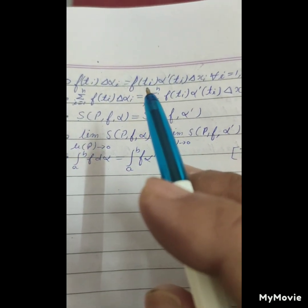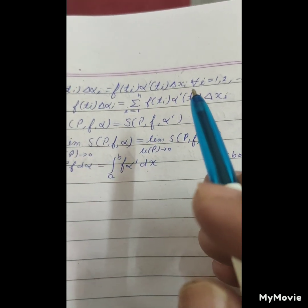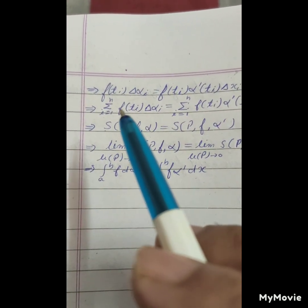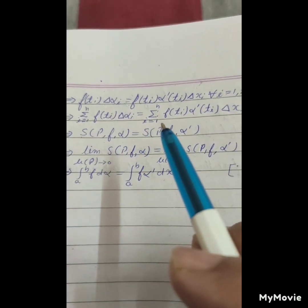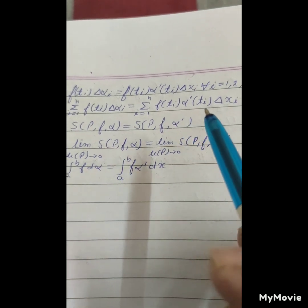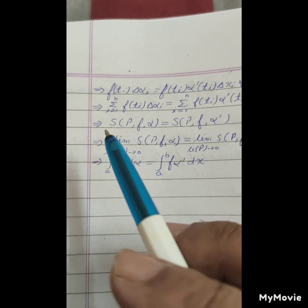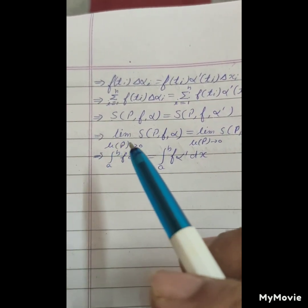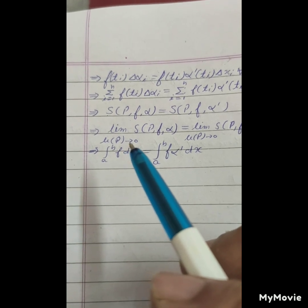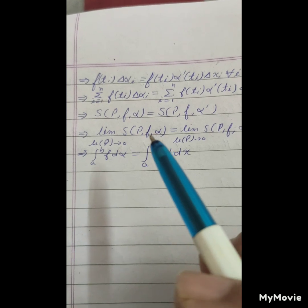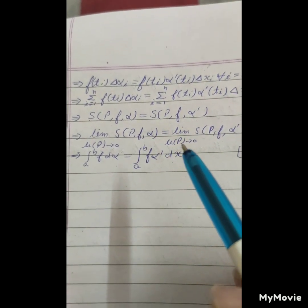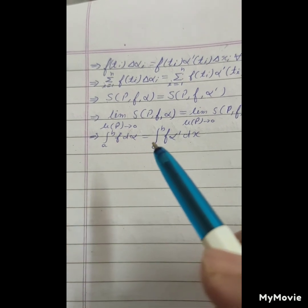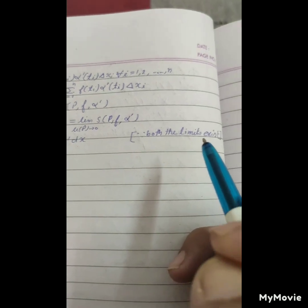This implies f(t_i) times delta alpha_i equals f(t_i) times alpha dash(t_i) times delta x_i, for all i from 1 to n. Summing from i equals 1 to n: sigma f(t_i) delta alpha_i equals sigma f(t_i) alpha dash(t_i) delta x_i, which equals S(P, f, alpha) and S(P, f, alpha dash). Taking the limit as mesh mu(P) tends to zero, we get the integral from a to b of f d alpha equals the integral from a to b of f alpha dash dx, because both limits exist.